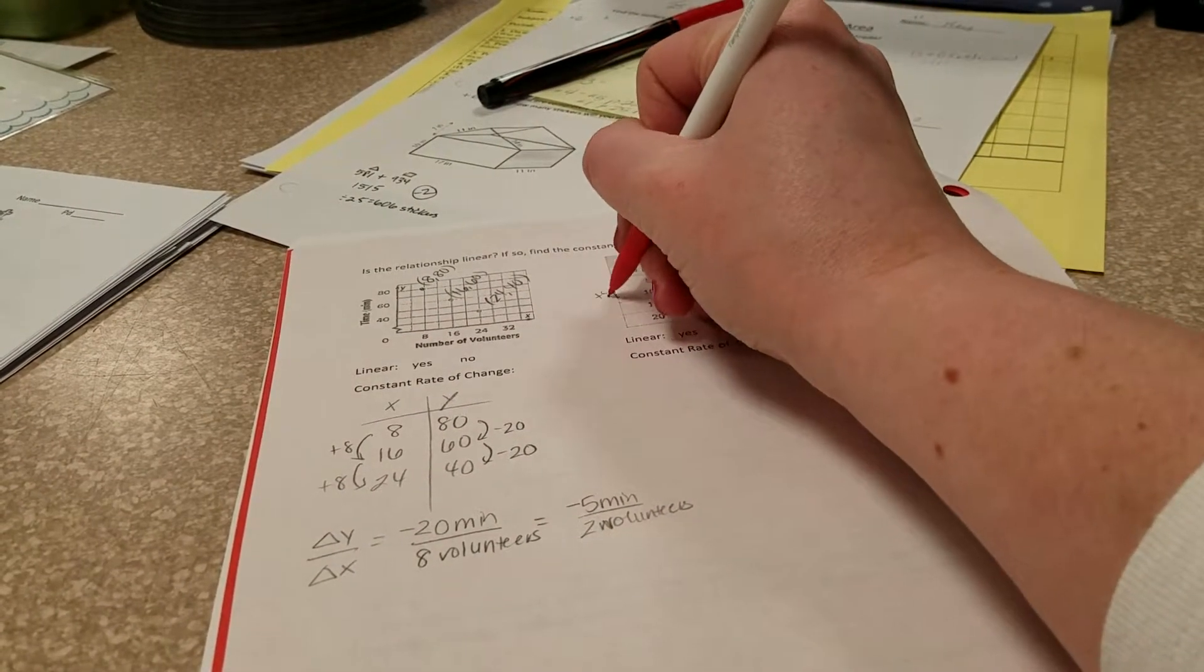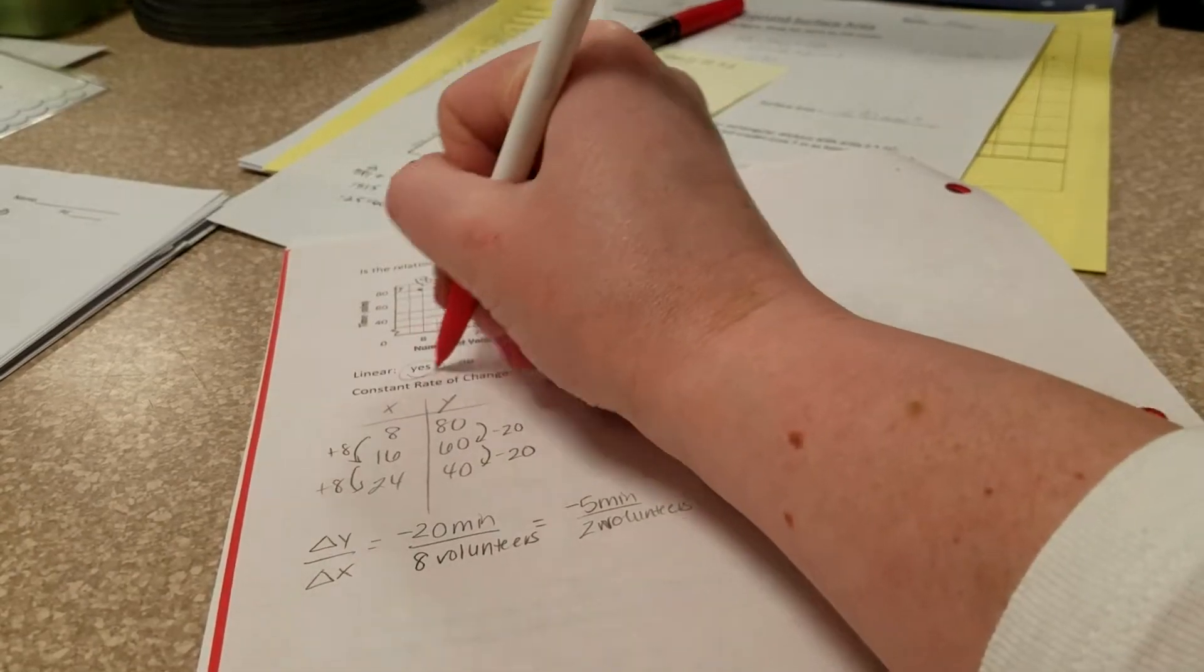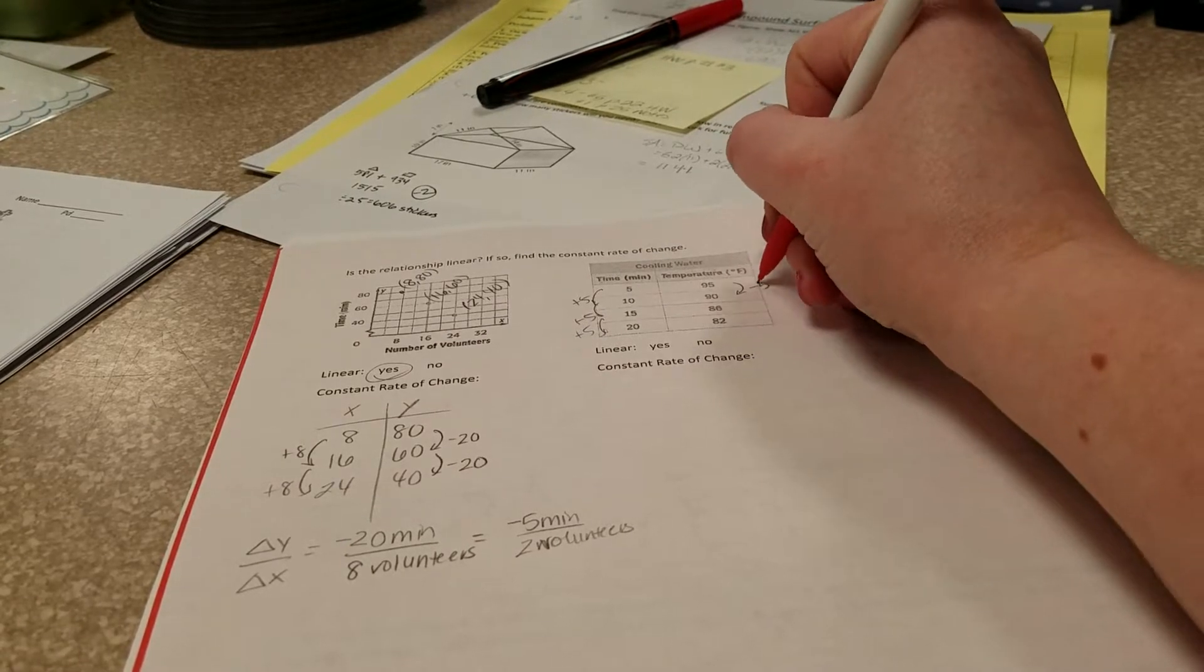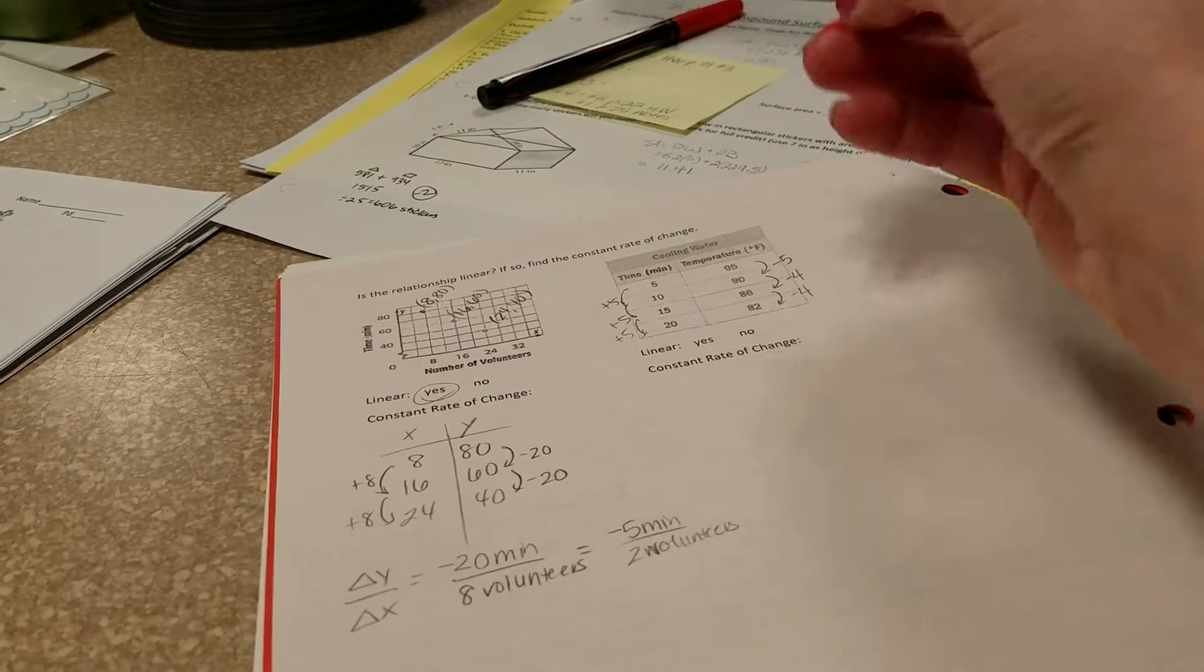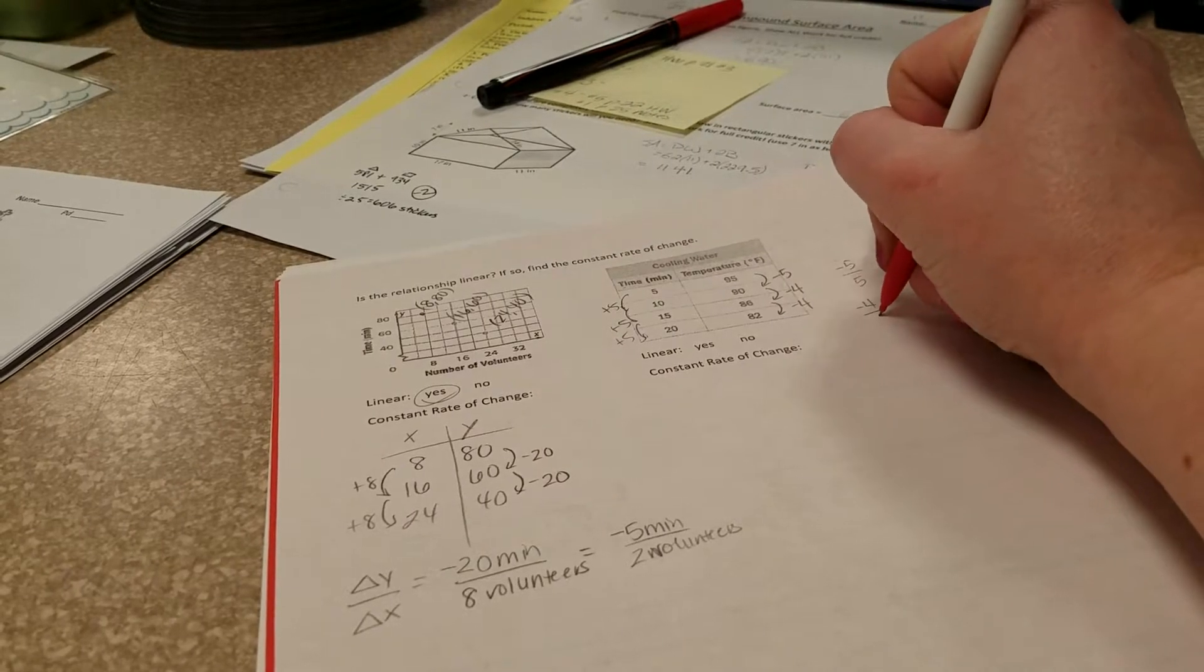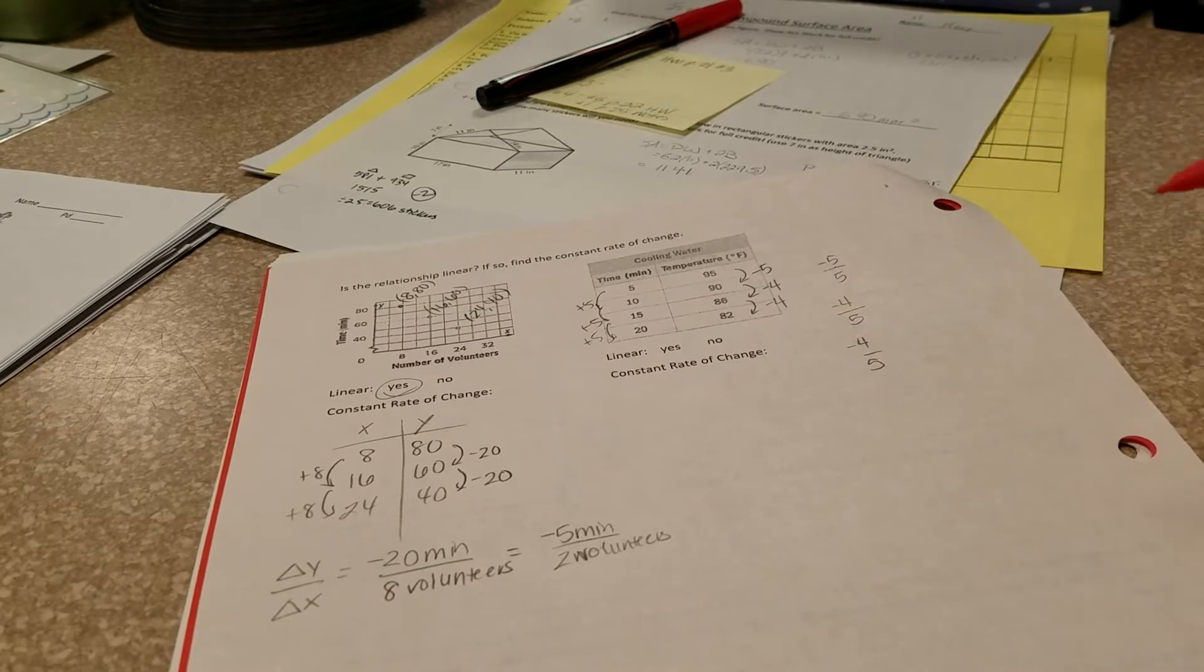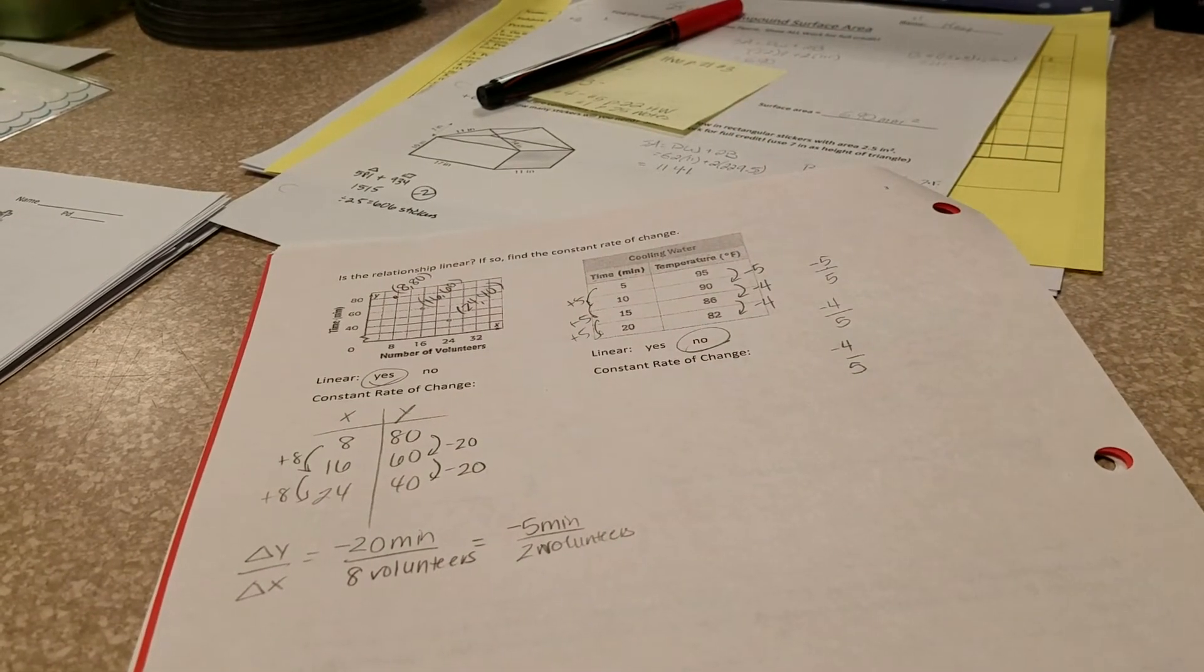Over here, if we add 5, it looks like every time on the x side. Oh, that one's a yes linear, sorry about that. Over here, it looks like we're decreasing by 5 here, decreasing by 4, and then decreasing by 4. If I look, my first rate of change is negative 5 over 5, but my next rate of change is negative 4 over 5 and negative 4 over 5. Those are not all the same, so we have to say no because it's not a linear relationship.